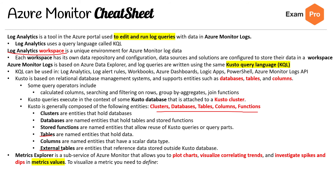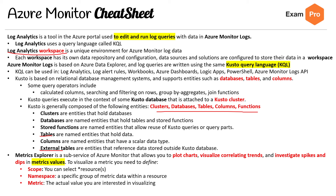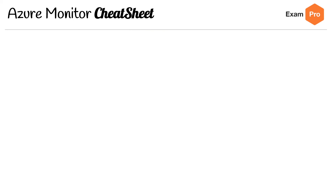Metrics Explorer is a subservice of Azure Monitor that allows you to plot charts, visualize correlating trends, and investigate spikes and dips in metric values. To visualize a metric, you need to define the scope, the namespace, the metric, and the aggregation.